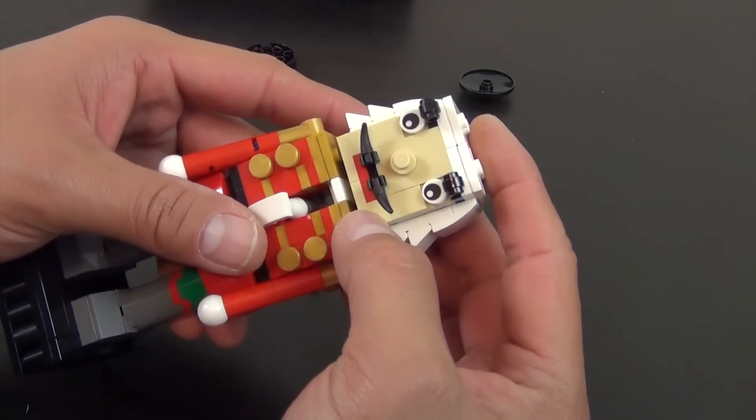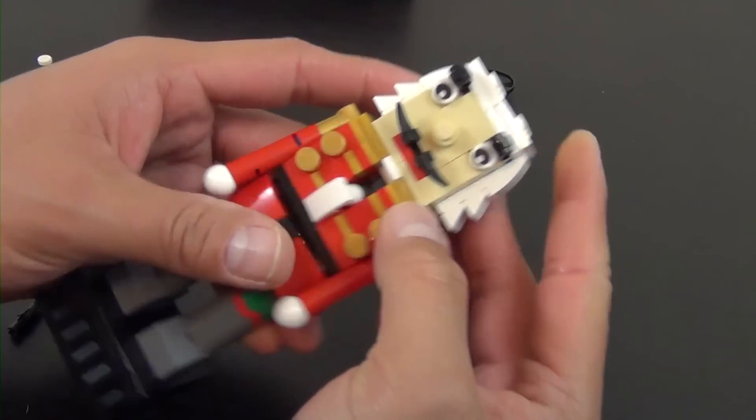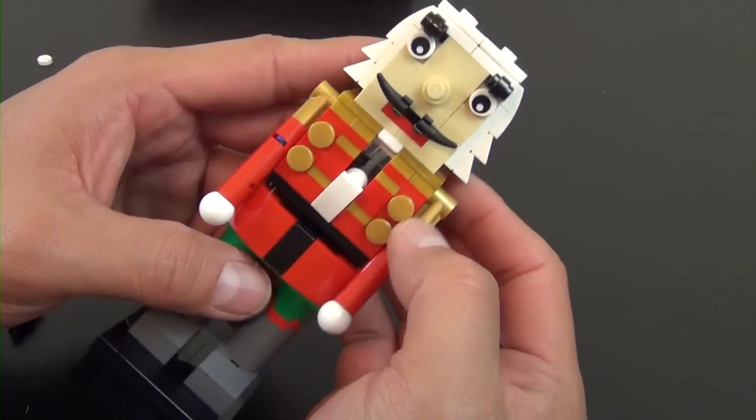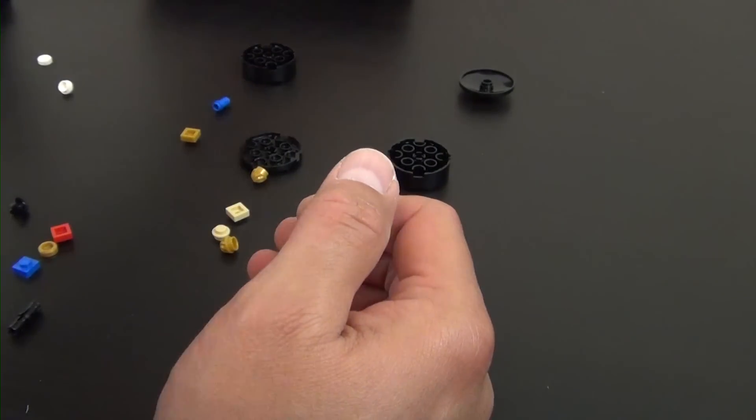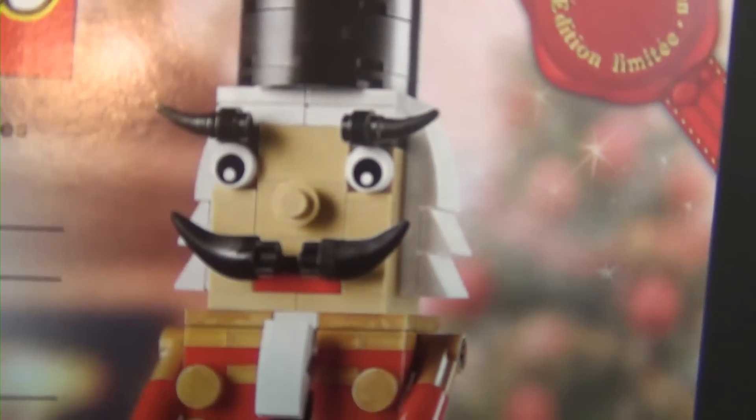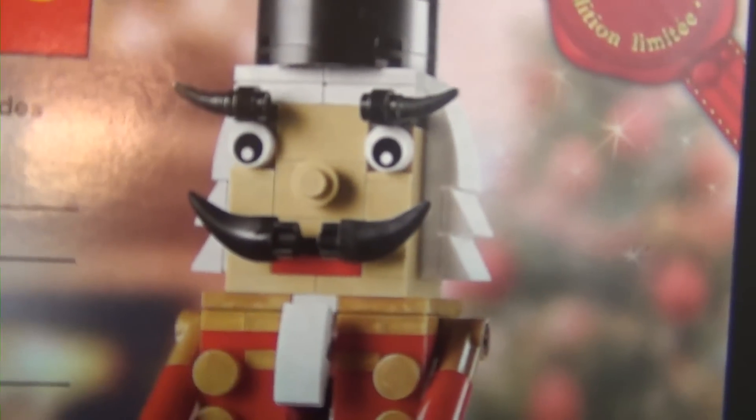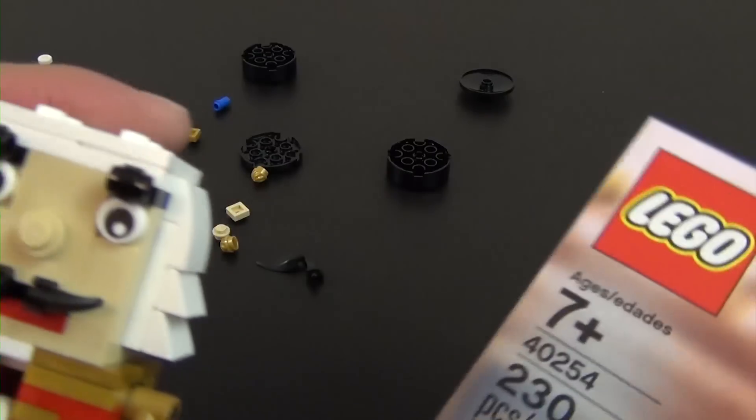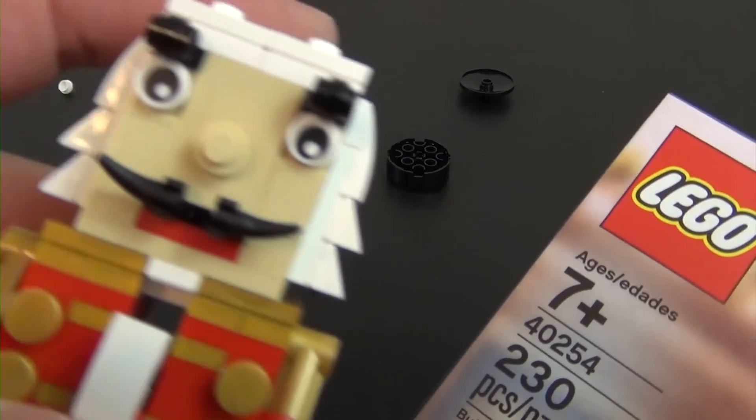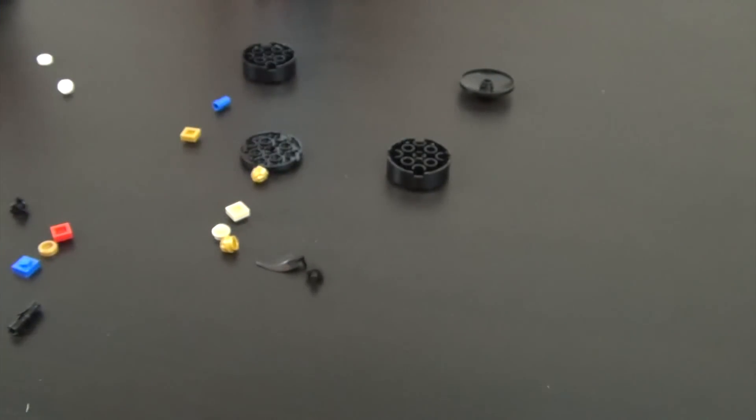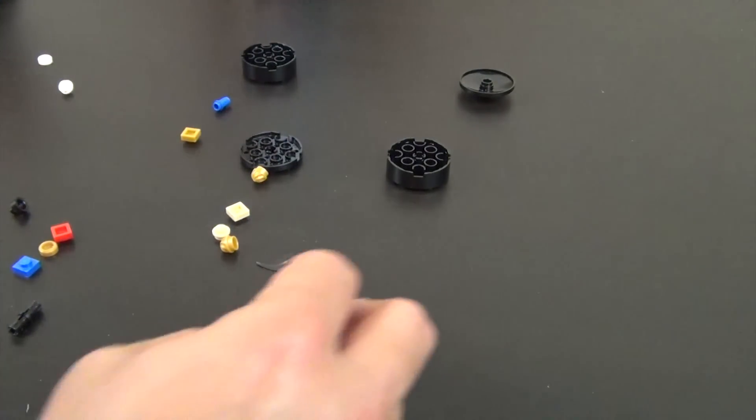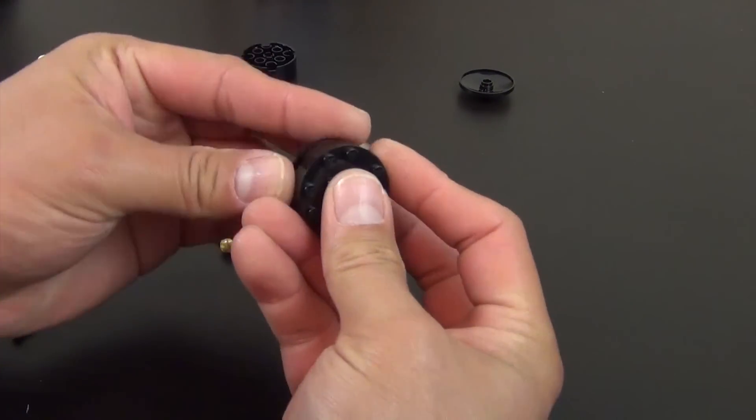So we'll take this guy, pop it on the top there. I like that a lot better than what it came with. You can see this is what it looks like on the box, that big mustache and the big bushy eyebrows versus what I've got on here. I don't know, maybe I'll switch it back. Either way it's kind of weird.